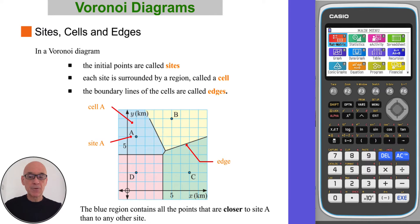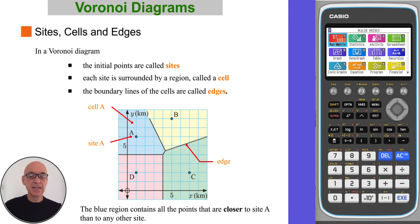The boundary lines of the cells are called edges. The blue region contains all the points that are closer to site A than to any other site.